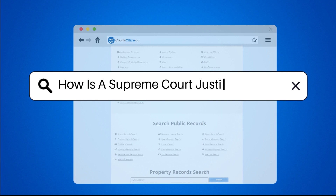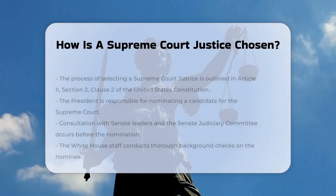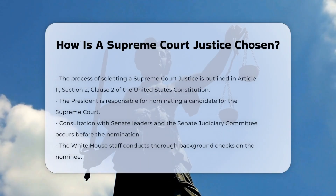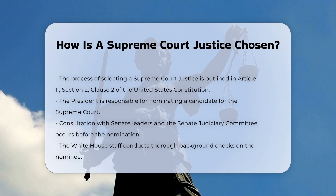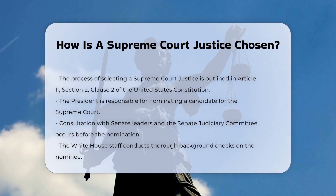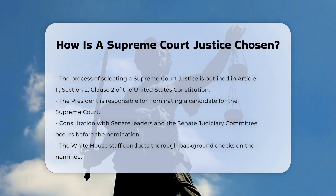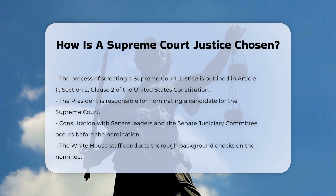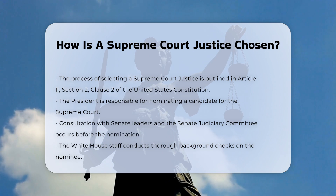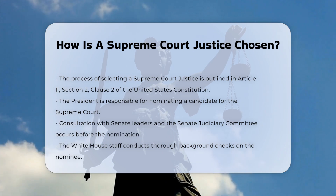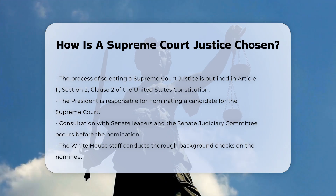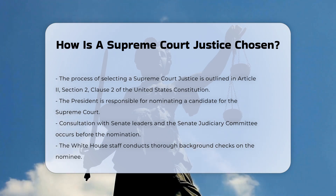How is a Supreme Court justice chosen? The process of selecting a Supreme Court justice is outlined in the United States Constitution, specifically in Article 2, Section 2, Clause 2, known as the Appointments Clause. This clause states that the President shall nominate and, by and with the advice and consent of the Senate, shall appoint judges of the Supreme Court.